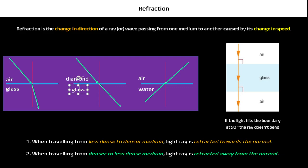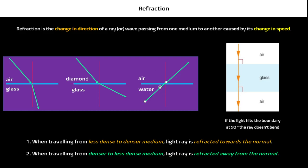For example, diamond to glass: diamond is a lot more dense than glass, so when you're travelling from denser to less dense, it will be refracted away from the normal. For water to air, it will also be from a denser medium to less dense medium, so your refracted ray will be away from the normal.